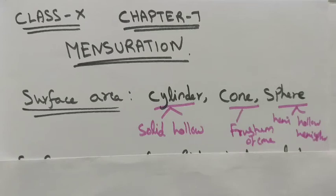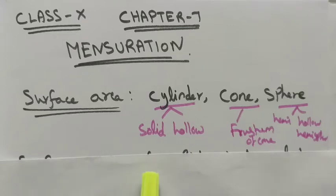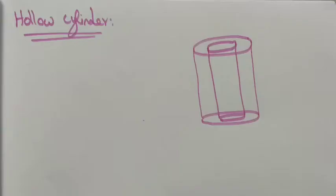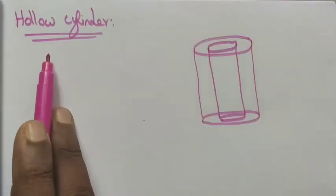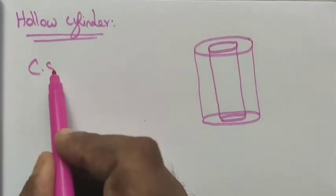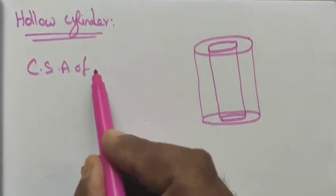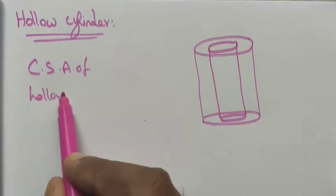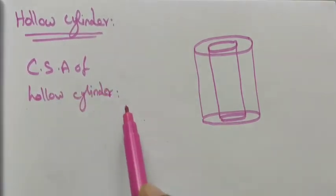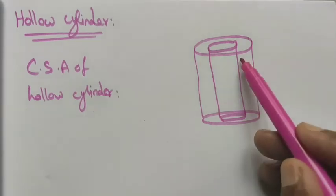Hi students, Class 10 Chapter 7. Here we are going to see the hollow cylinder — the hollow cylinder curved surface area and total surface area. Next we see the hollow cylinder. Here we want to find the curved surface area (CSA) of the hollow cylinder and TSA of the hollow cylinder.